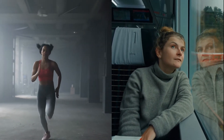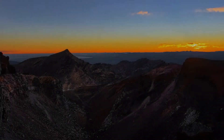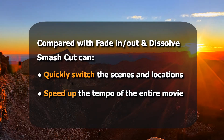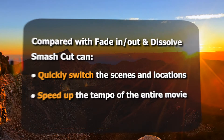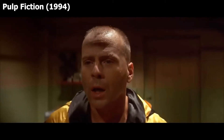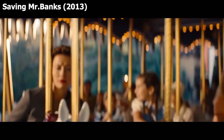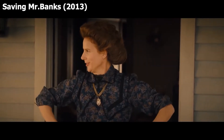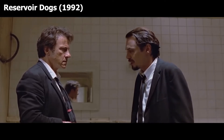Comparing Smash Cut with the fade-in, fade-out, or dissolve edits we talked about before, it can quickly switch the scenes and locations in a movie, and eventually speed up the tempo of the entire movie. Directors like Smash Cut in film production — it's also the most commonly used editing technique. When using it properly, it can create extra fun or emotional shock.